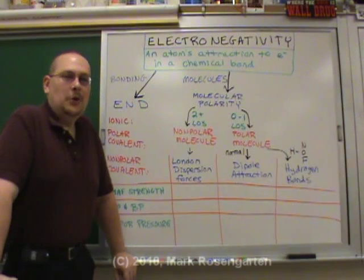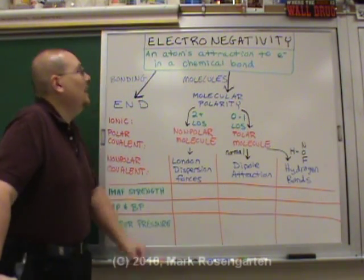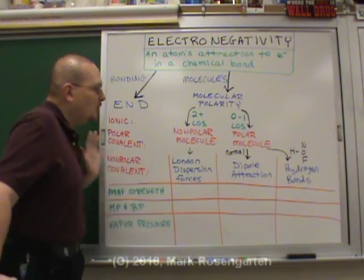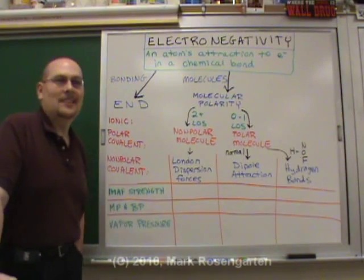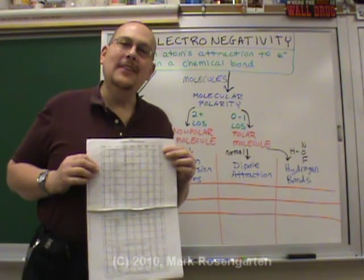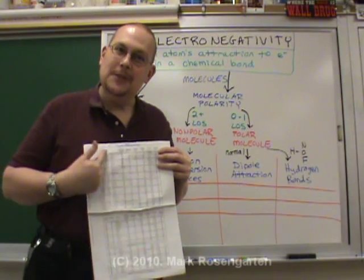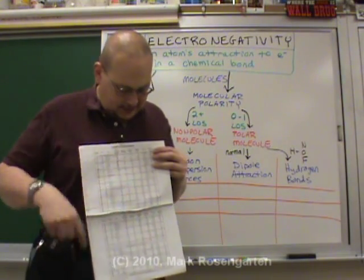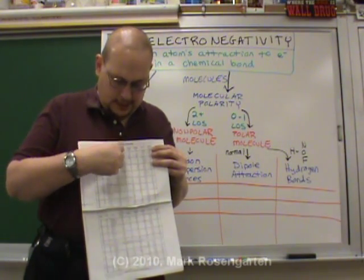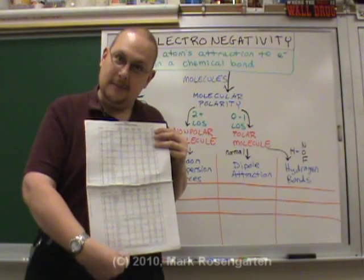For today's tutorial we're going to take a look at how electronegativity impacts all of these things right here. You can find the electronegativity of any element simply by going to reference table S and looking it up on the electronegativity table.